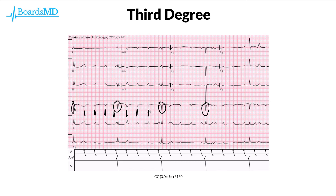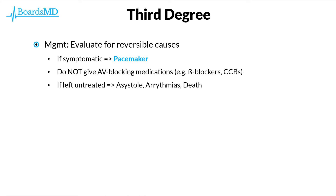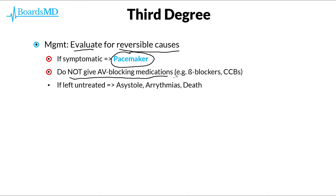Our first step in the management of patients with third degree heart block is to evaluate for reversible causes. Myocardial ischemia, as well as medications that slow conduction through the AV node, can contribute to this condition. Ultimately, if our patient is symptomatic and has third degree heart block, they are absolutely going to need a pacemaker as definitive management. We must also make sure we are not giving AV blocking medications such as beta blockers or calcium channel blockers.